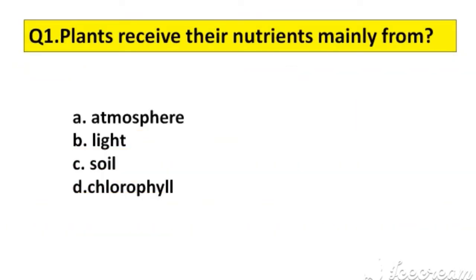Question number 1. Plants receive their nutrition mainly from: A. Atmosphere, B. Light, C. Soil, D. Chlorophyll. The right answer is option C, Soil.